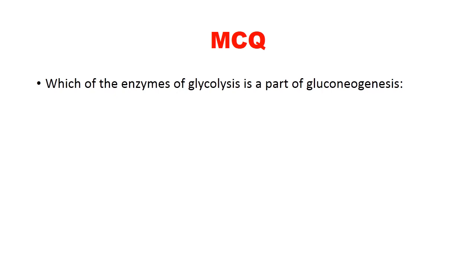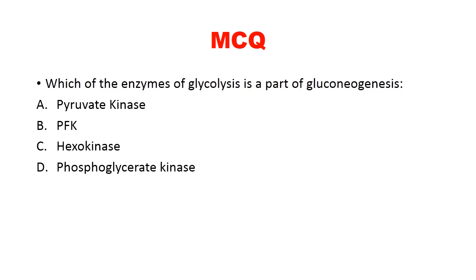MCQ 6: Which enzyme of glycolysis is also part of gluconeogenesis? Options: pyruvate kinase, phosphofructokinase-1, hexokinase, phosphoglycerate kinase. Using the mnemonic HP1 printer — hexokinase, phosphofructokinase-1, and pyruvate kinase are all irreversible steps, so they are bypassed in gluconeogenesis by other enzymes. Only phosphoglycerate kinase catalyzes a reversible step, making it the answer.